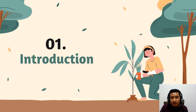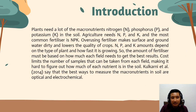For the introduction: plants need micronutrients — nitrogen (N), phosphorus (P), and potassium (K) in the soil. Agriculture needs NPK, and the most common fertilizer is NPK. However, using fertilizer makes surface and ground water dirty and lowers the quality of crops. The amount of NPK depends on the type of plant and how fast it is growing, so the amount of fertilizer must be based on how much the field needs to get the best result.